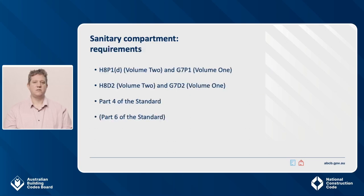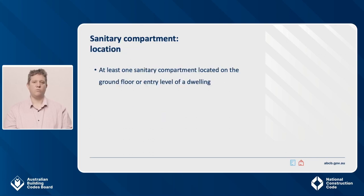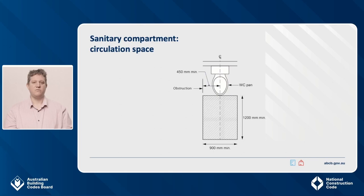Sanitary compartments are covered by H8P1D in NCC Volume 2 and G7P1 in NCC Volume 1, H8D2 in NCC Volume 2 and G7D2 in NCC Volume 1, and Part 4 of the standard. Part 6 of the standard also applies, which we will cover shortly. Clause 4.1 requires at least one sanitary compartment to be located on the ground floor or entry level of a dwelling. Clear circulation space in front of and to the side of the toilet pan improves usability for children, older people and people with a mobility disability. A sanitary compartment that is subject to Clause 4.1 needs to meet certain circulation requirements of the standard.